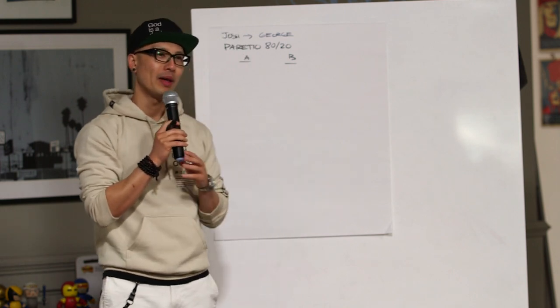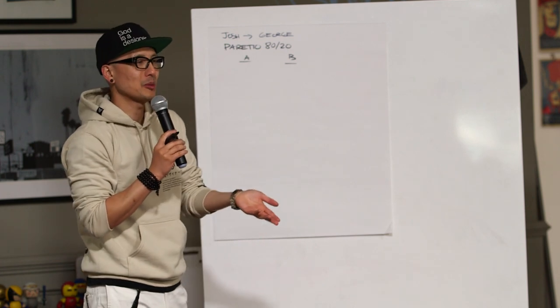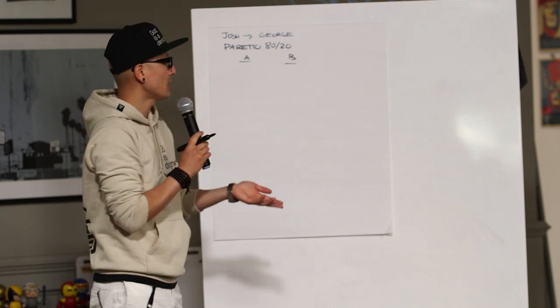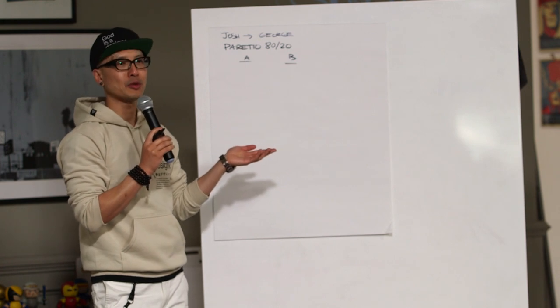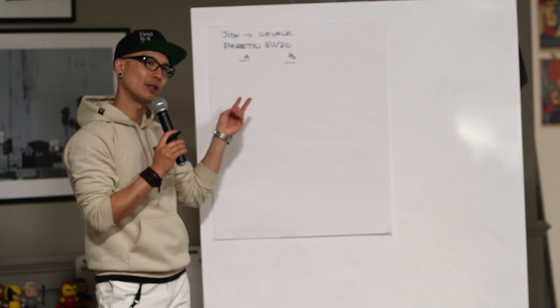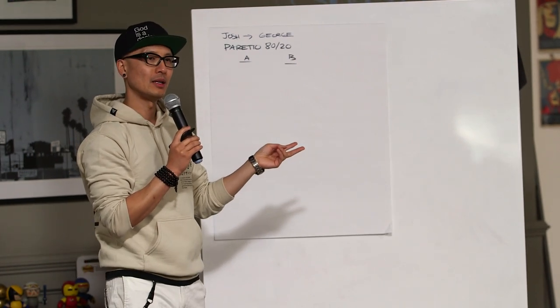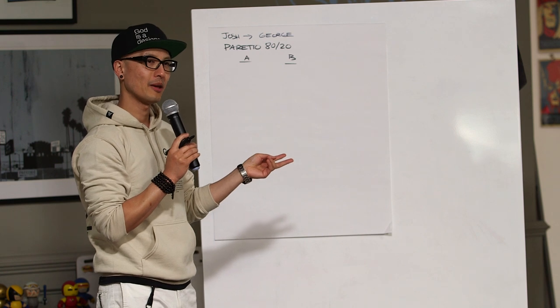The mistake that we all make is we try to get an A in every single class. We were taught to do that because you want to make the principal's list, the dean's list, valedictorian, whatever it is. And then you wind up just being average. That's what that A stands for, average, right? You just want to excel in two and possibly get a C in every other one, possibly even flunk. It doesn't matter.